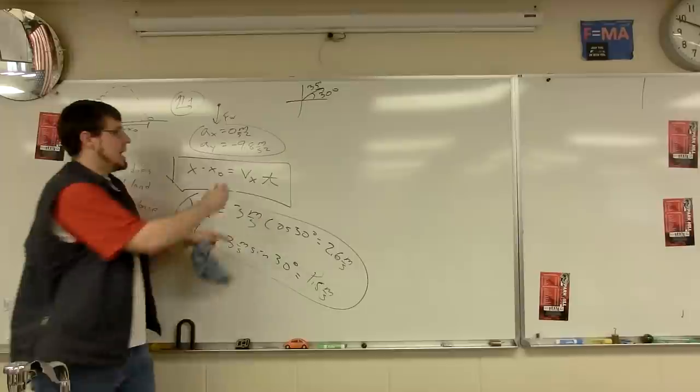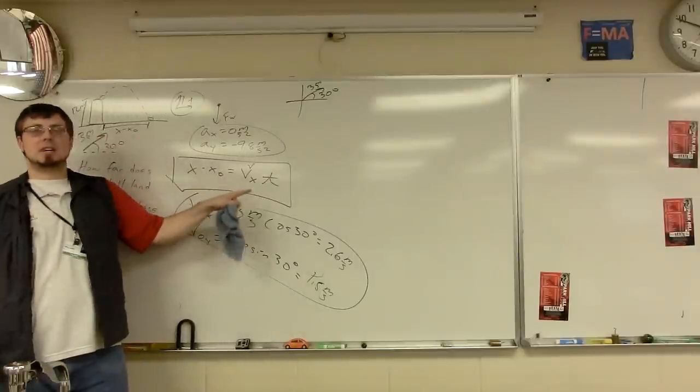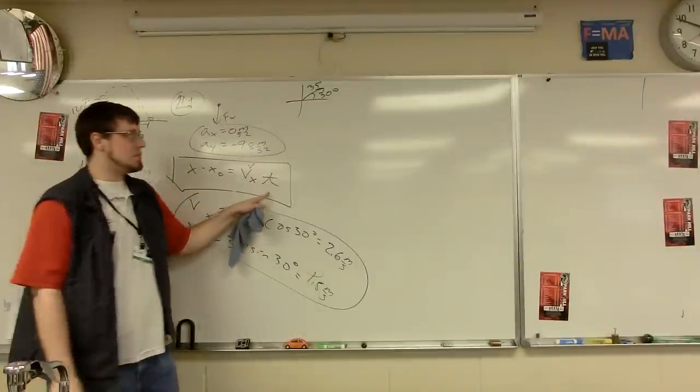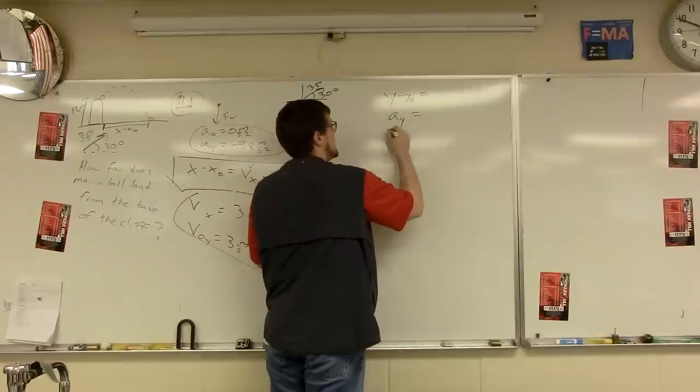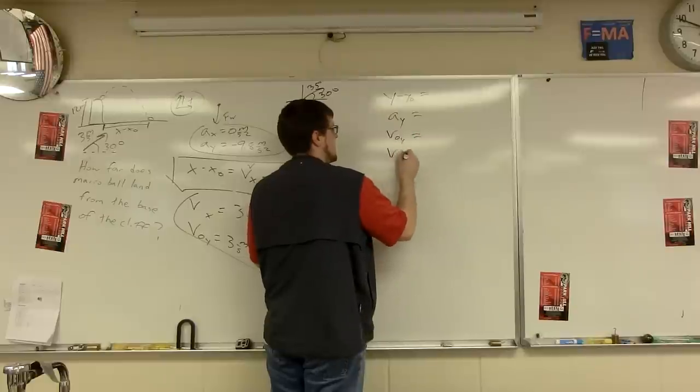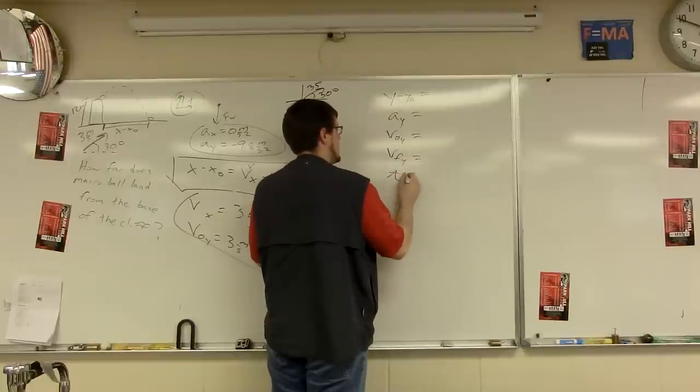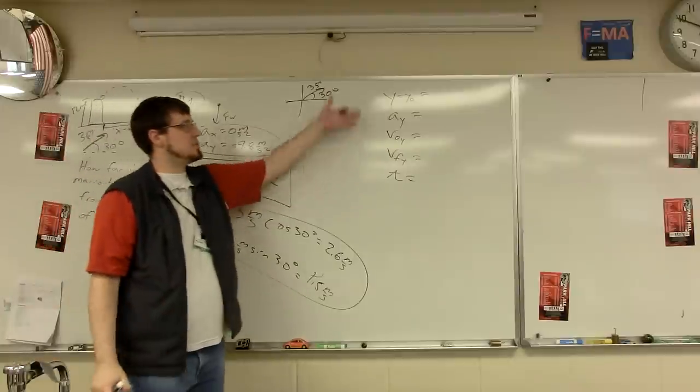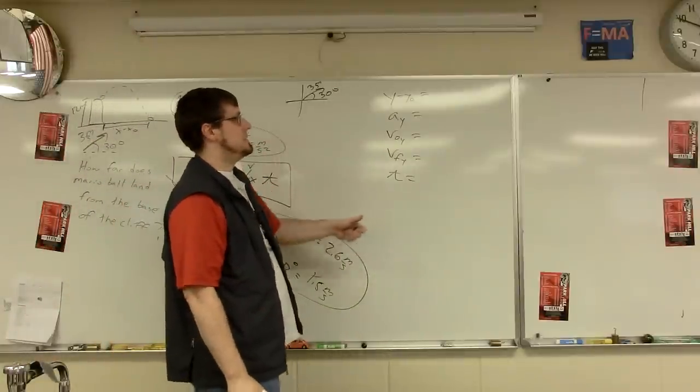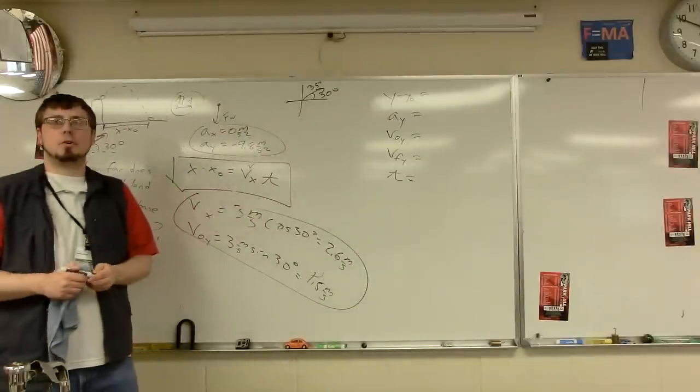Now, we need time. We have VX. We're stuck in the X direction. So I'm going to list my 5 variables for the Y direction. So Y minus Y naught. Acceleration in the Y. Initial velocity in any order. V final in the Y and time. And notice, I'm writing all the Ys. You should too. Keep this stuff straight. This is different than the X direction. So now we're thinking about what's happening in the vertical direction.